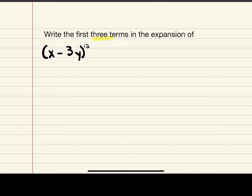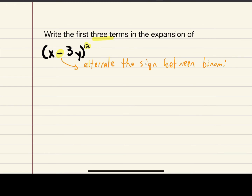For this next example, we want to write the first three terms in the expansion of (x − 3y)^12. The subtraction sign makes the expansion a little different. When there's a subtraction sign between a and b, we alternate the sign between the terms, starting with negative.